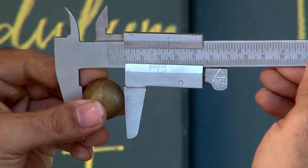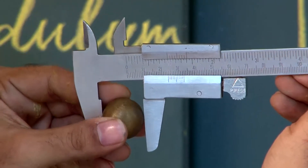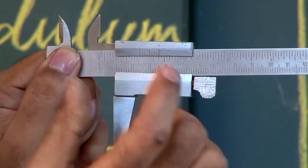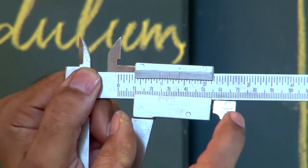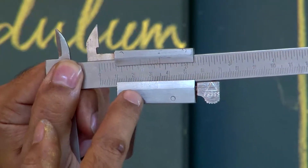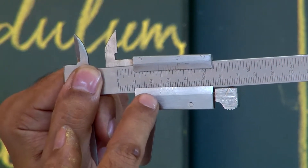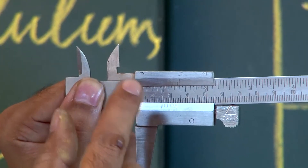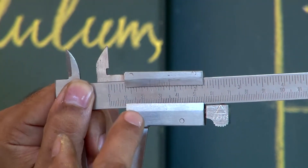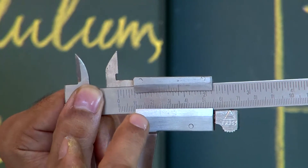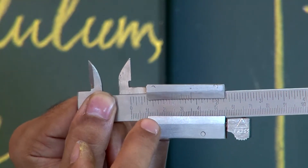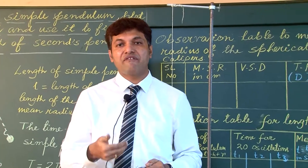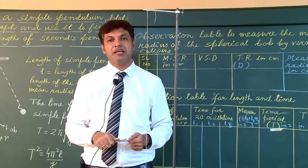We have to place the spherical bob between the two jaws of the vernier calipers and take the reading from the scale — the main scale and the vernier scale. The vernier zero touches exactly at 2.4 on the main scale and the vernier zero coincides with the main scale, so there is no contribution from the vernier scale. Therefore 2.4 centimeter is the diameter of this spherical bob, and diameter by 2 gives a mean radius of 1.20 cm.